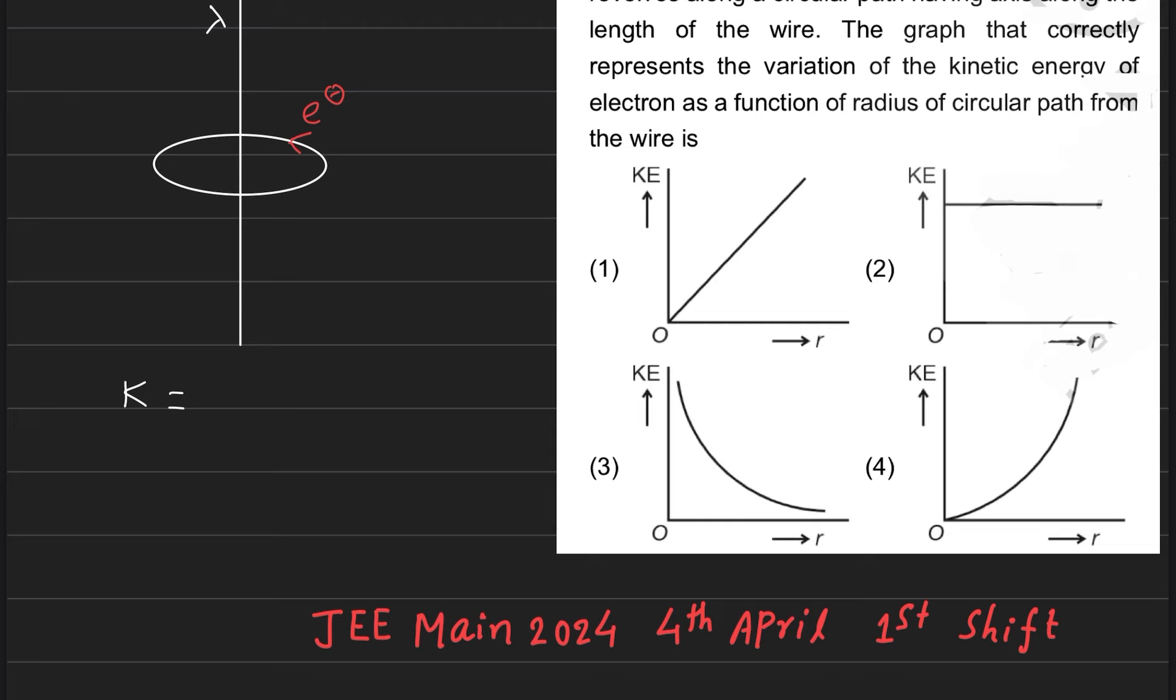Kinetic energy is equal to half mv square. And when anyone moves on a circular path, then the centripetal force will be equal to the electrostatic force, because we will see electrostatic force here.